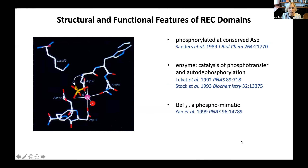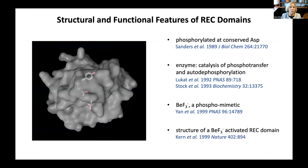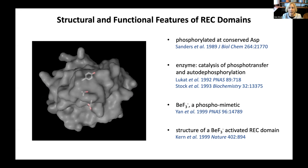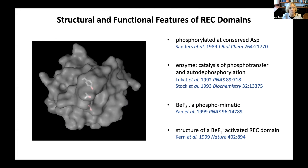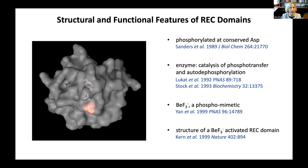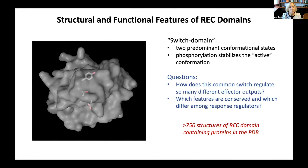Subsequently, Sydney Kustu's lab at Berkeley reported that beryllium fluoride, BeF3, could serve as a phosphomimetic for the chemically labile phosphoaspartate. This opened the door for determination of an NMR structure of a receiver domain in an active conformation, solved by Dorothy Kern and colleagues in David Wemmer's lab. As seen in this animation, the receiver domain can be thought of as a switch domain existing in two predominant conformational states, with phosphorylation stabilizing one state deemed the active conformation. Research then shifted towards answering two fundamental questions.